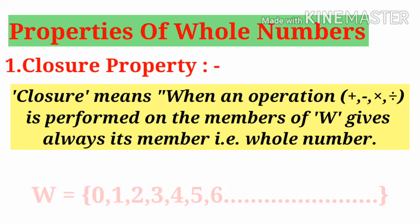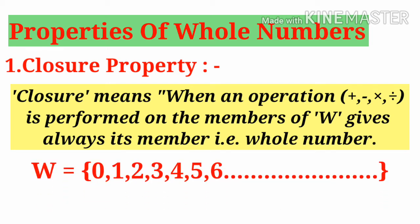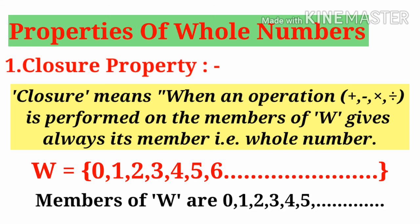Whole Numbers are denoted by W equals 0, 1, 2, 3, 4, 5, 6, and so on. So, the family name is Whole Number W and its members are 0, 1, 2, 3, 4, 5, and so on.